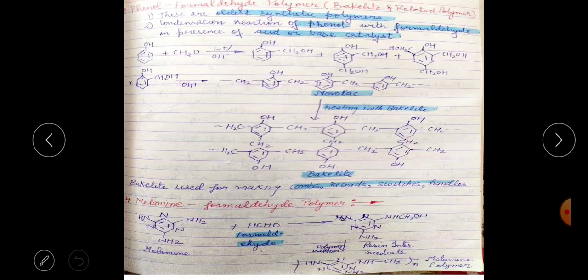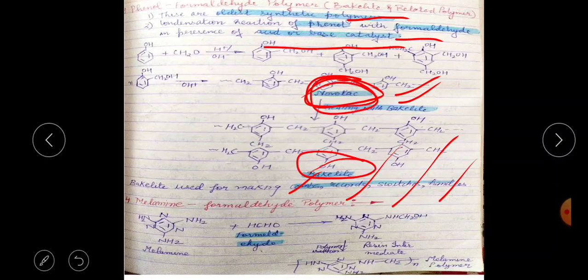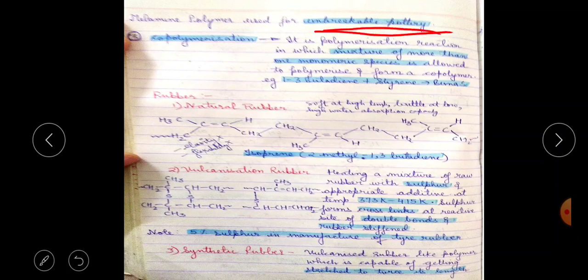Bakelite is very important — it is made from phenol and formaldehyde. First, novolac is formed; then, on heating, novolac gives bakelite. Once bakelite breaks, it cannot be reused. It is used in combs, records, switches, and handles, and requires acid and base catalysts. Melamine-formaldehyde polymer is used for making pottery items.